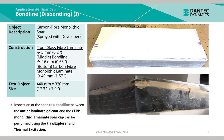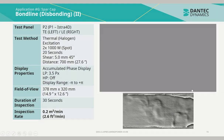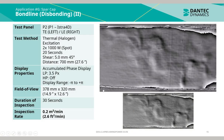Bond line disbonding on the spar cap: in this application, the object under inspection was a carbon fibre monolithic spar cap sprayed with developer. Inspection of the spar cap bond line between the outer laminate gel coat and the CFRP monolithic laminate spar cap can be performed using the floor explorer and thermal excitation. In the video presented, two 1000W spot halogen heat lamps are used for a heat duration of 20 seconds. Waiting another 10 seconds afterwards, we can see the localised disbonding fringes between the gel coat and the spar laminate.